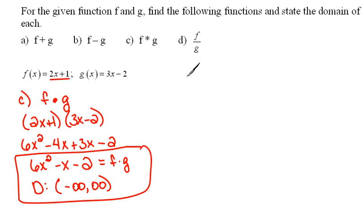Now lastly, part D asks us to do F divided by G. So we're going to take the F function, which is 2x plus 1, and we're going to divide that by the G function, which is 3x minus 2.